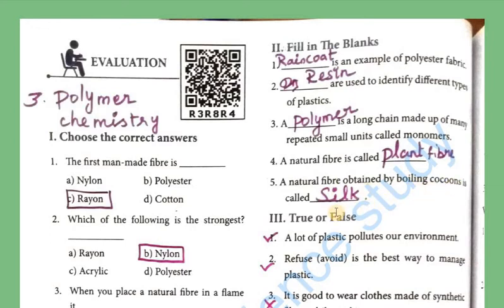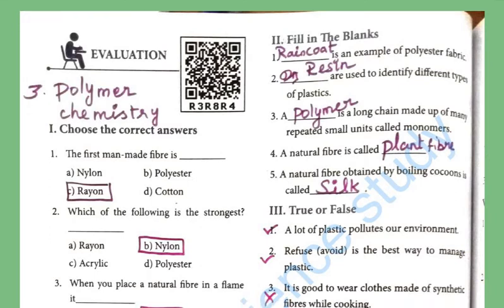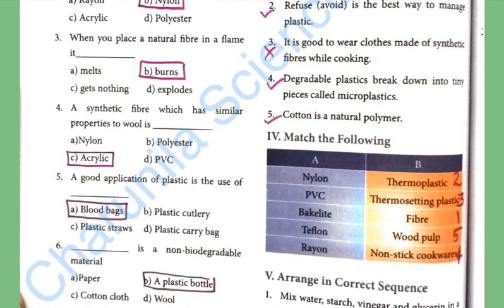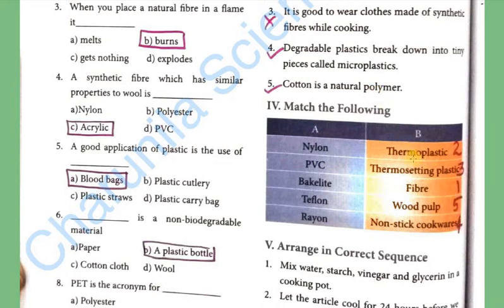Sixth: The non-biodegradable material is plastic bottle — PET, which stands for polyethylene terephthalate. Fill in the blanks: An example of polyester fabric is raincoat. Resin codes are used to identify different types of plastics. A polymer is a long chain made up of many repeated small units called monomers. A natural fibre is called plant fibre. The natural fibre obtained by boiling cocoons is called silk.